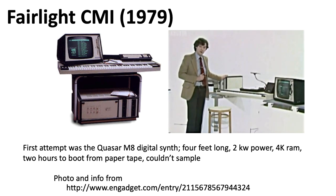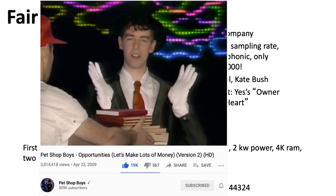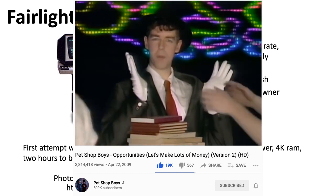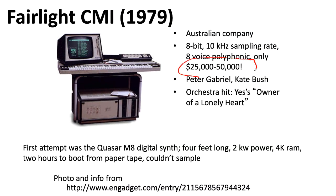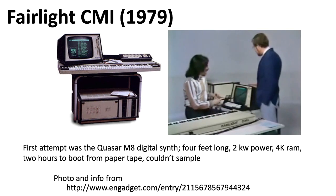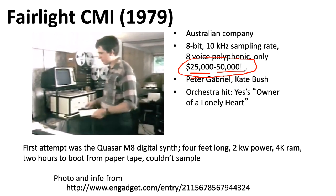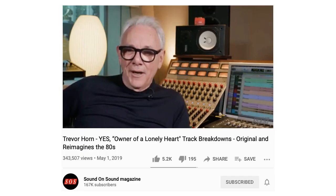One early well-known commercial sampling instrument was the Fairlight CMI. These things had really cruddy technical specifications compared to what we have today, but some tremendously amazing music was made with them. They were a bit on the expensive side — remember, this is $25,000 to $50,000, which was really, really a lot of money back in 1979. So only folks like Peter Gabriel and Kate Bush could afford something like this, or perhaps Trevor Horn.